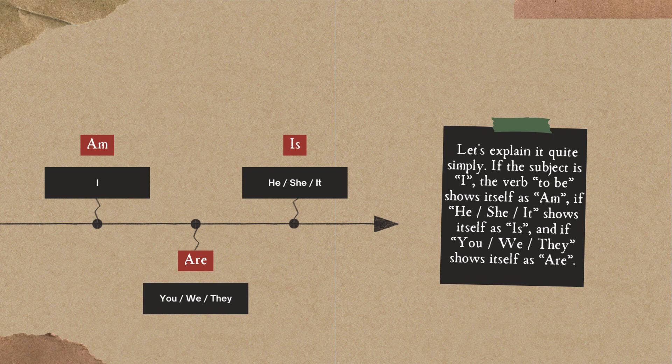If the subject is I, the verb to be shows itself as am. If he, she, it shows itself as is. And if you, we, they shows itself as are.